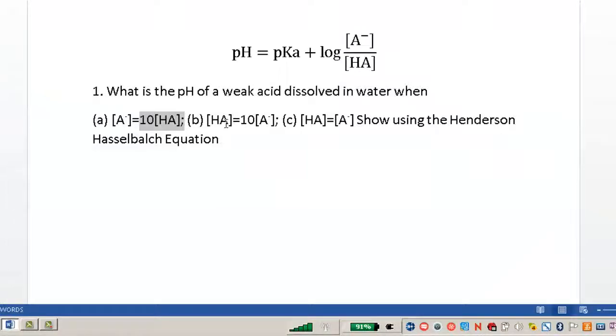In part B, where the HA concentration is 10 times the concentration of A-. Notice here, one is tenfold greater than the other. And find the pH where HA is equal to A-.